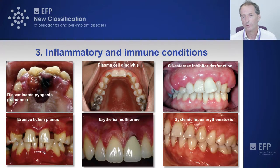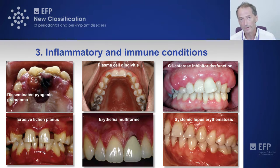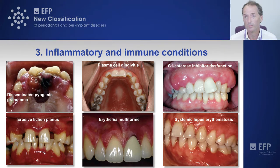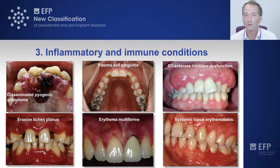Then we have the inflammatory and immune conditions, of which there are many. Disseminated pyogenic granulomas can affect the skin and be disseminated throughout the body, even involving the central nervous system and spinal cord. We are in a unique position because the mouth is accessible for biopsy, allowing us to come up with a diagnosis that may inform medical management and avoid the need for spinal surgery, as was the case in this particular patient.